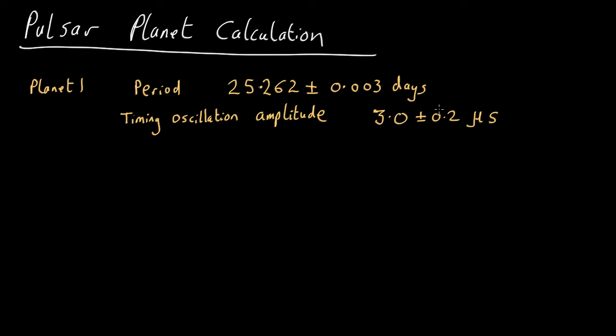Okay, so finally we've got the tools we need to work out the mass and the orbit of one of these planets. We'll assume the planet is in an edge-on orbit, so this will give us a lower limit on the mass. There actually turn out to be three planets in the system. We'll just pick one of them as an example of how you do the calculation.